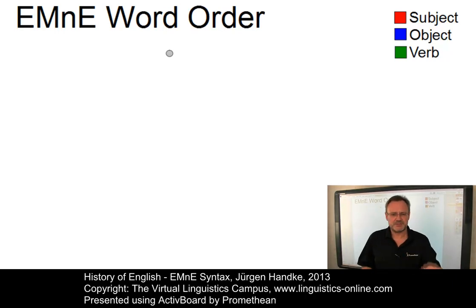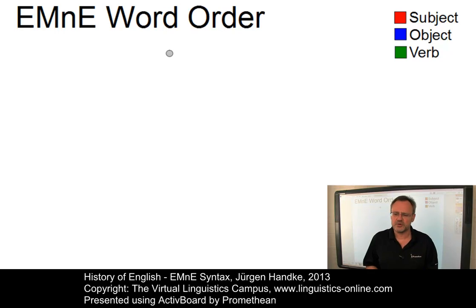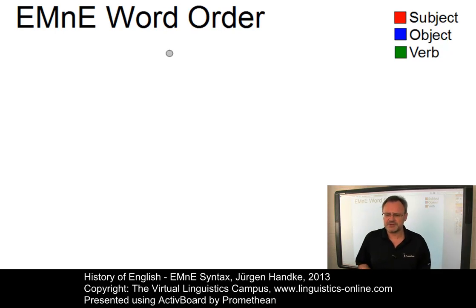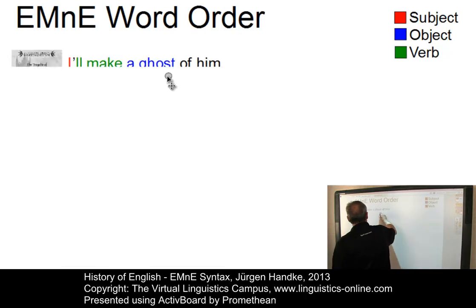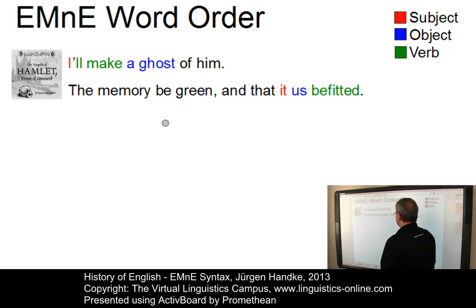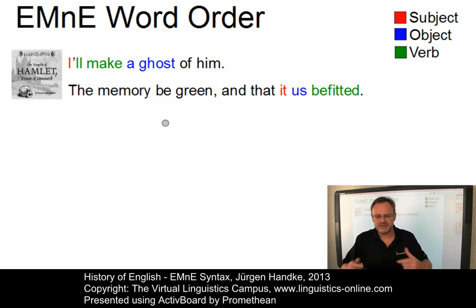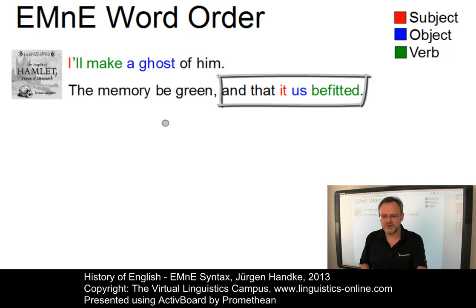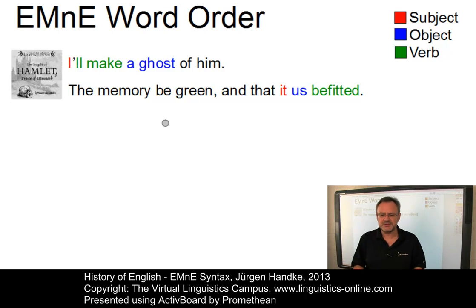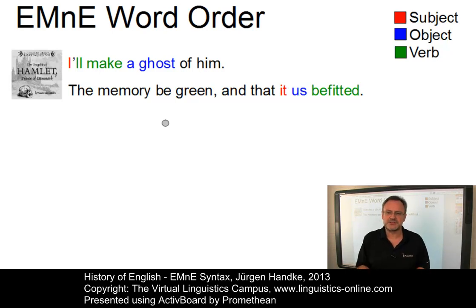In early modern English, the order subject, verb, object was now the main word order. It occurred in main and subordinate declarative clauses and was most widely spread in the literature. However, deviant patterns still occurred. The first two examples come from Hamlet and they illustrate quite nicely the flexibility of word order. In the first case, 'I'll make a ghost of him' — we clearly have an example of an SVO structure. Whereas in the second case, 'the memory be green and that it was befitted' exhibits subject, object, verb. The SOV pattern was still an available option during the early modern English period, especially for pronominal objects and in subordinate clauses.